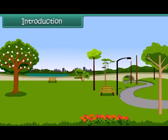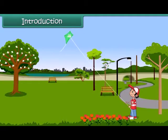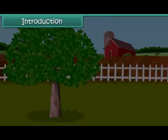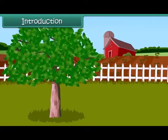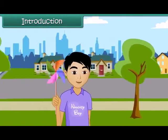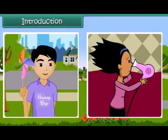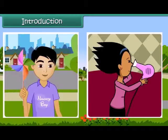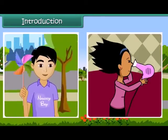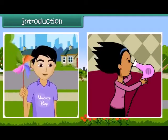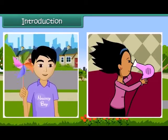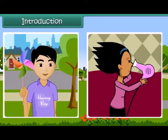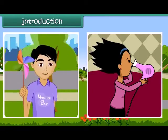Dear friends, do you have any idea as to how a kite flies? How do the leaves of a tree move? Or have you ever played with a paper windmill? How does this happen? Friends, this happens due to the movement of air. Air is present everywhere around us and we can feel it.